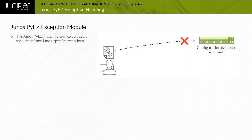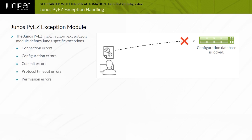Junos PyEasy includes the jnpr.junos.exception Python module that is used to handle Junos PyEasy runtime exceptions. The jnpr.junos.exception module defines Junos-specific exceptions such as connection errors, configuration errors, commit errors, protocol timeout errors, permission errors, and authentication errors.